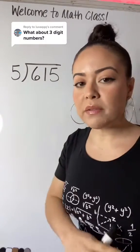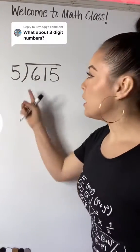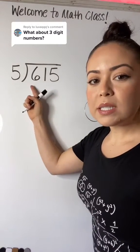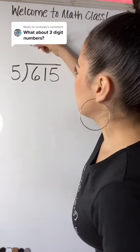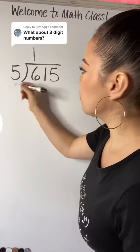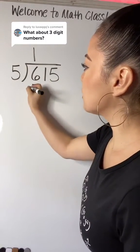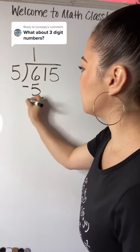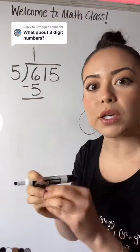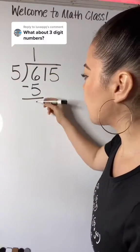Like I showed you in the previous video, you take it digit by digit. Start with six. Five goes into six one time. So we're going to put the one above the six and then multiply, put that underneath and subtract. Remember that division and subtraction are cousins — they work together. Six minus five is one.